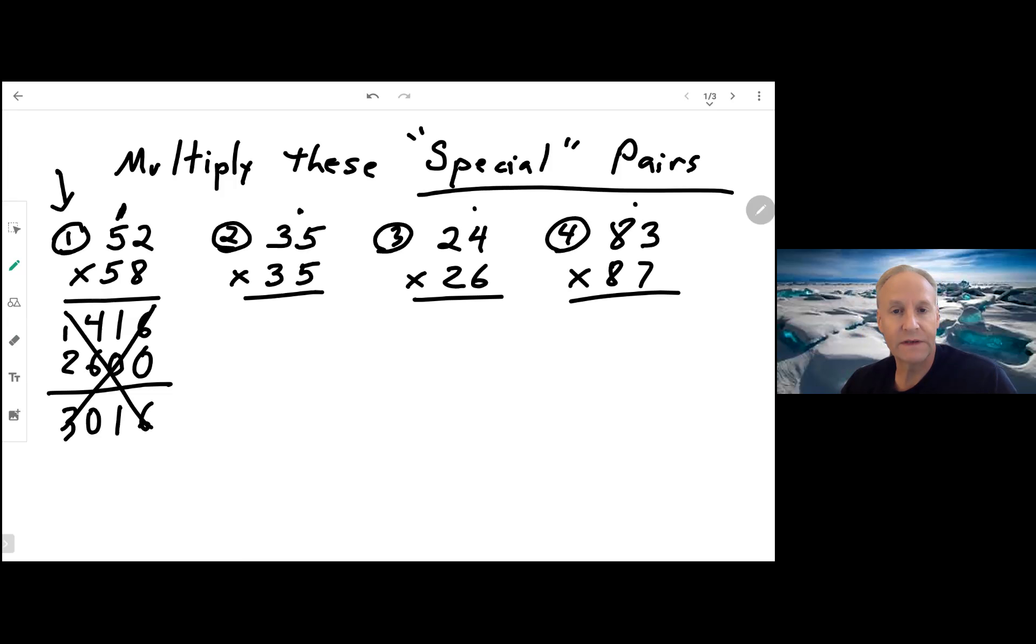Take a look at them and see if you can tell what makes these all alike. They have two things in common. The 10s digits are the same. Notice that this is 52 times 58, 35 times 35, 24 times 26, and 83 times 87. The ones digits are different, but they also have something in common. Two and eight adds up to 10, five and five has a sum of 10, four and six has a sum of 10, and three and seven has a sum of 10. So those are called conjugates. When you have multiplications that look like this, there is a shortcut that you can use.